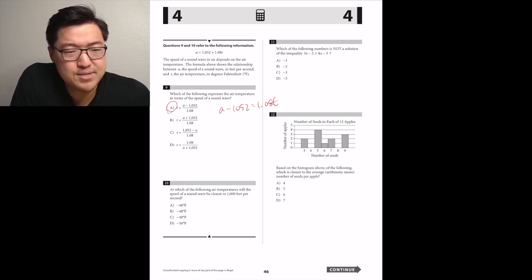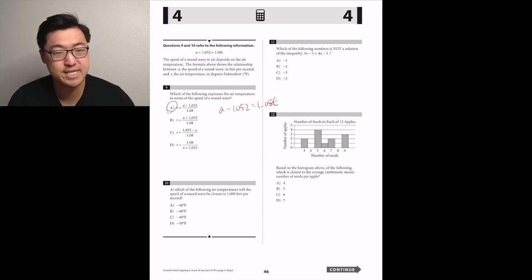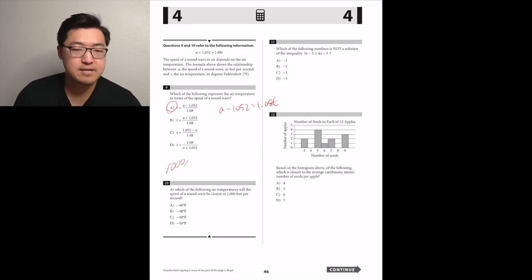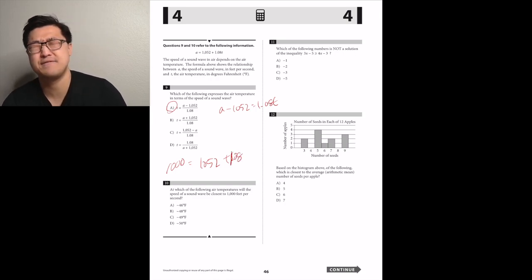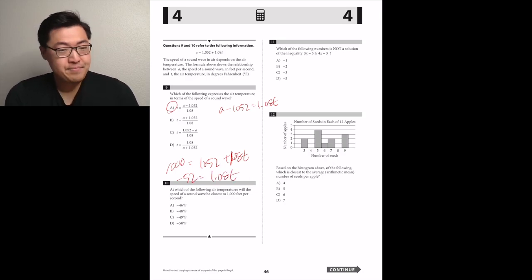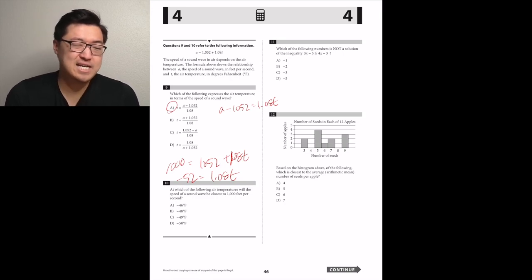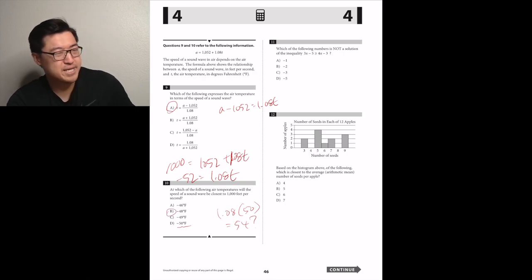Number 10. At which of the following air temperatures will the speed of a sound wave be closest to 1,000 feet per second? They're really straining my brain. So then we need to plug in 1,000 for A and see if we can solve for T. 1,000 is equal to 1,052 plus 1.08T. You'll get negative 52 is equal to 1.08T. So whatever 52 divided by 1.08 is. I'm going to use some answer choices to help me ballpark. I'll start from D because 50 is kind of a nice number to multiply 1.08 by. I believe that'll give you 54. So if we have 54, we want to go down like two degrees because each degree is going to drop it like a little bit more than one degree. So I'm going to guess B.